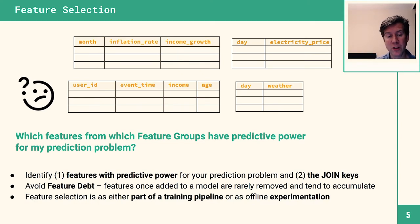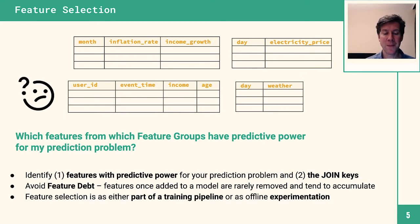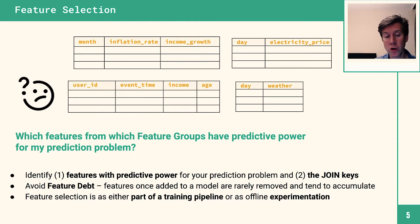When we talk about feature selection in the context of the feature store, features are stored in a scope called a feature group — essentially a table of features. As a data scientist you can browse available feature groups, find features with predictive power for your problem, but when you want features from many different tables you'll need to join them together. To join tables you need a join key that is common between the two tables.